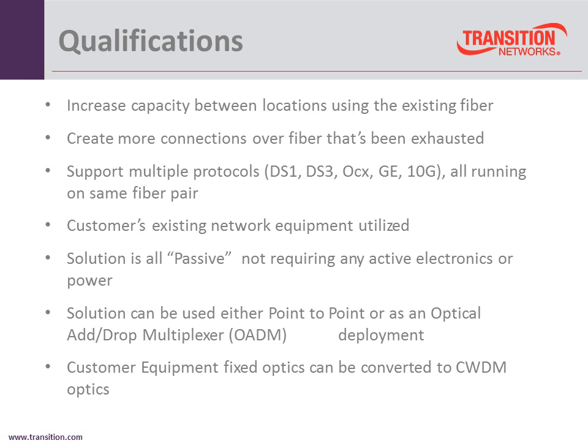Another qualification is utilizing your existing network better. This CWDM solution is all passive — you don't plug it in for power, there's no power to connect, no configuration. This operation is plug and play. I put in a mux, plug in my one fiber pair loop, and all the rest are LC connectors where I plug a CWDM SFP into the device and plug the loop in on a separate wavelength. There's no configuration, no fans, no power. It's an all-passive system, which makes it easy to install.